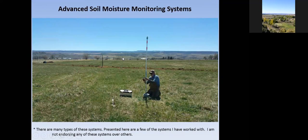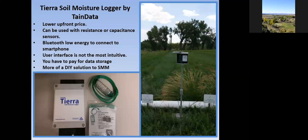There are many types of advanced soil moisture monitoring systems — I am not endorsing any over others. The first I'll touch on is TRS soil moisture loggers made by a company called Cane Data. These use resistance-type soil moisture sensors and have a lower upfront price than some other systems. You can also attach capacitance sensors to them, so they're versatile. This system works off Bluetooth — you put the box in your field, attach your sensors, and walk out with your cell phone to instantly grab the data.